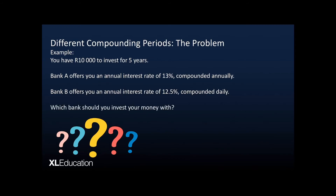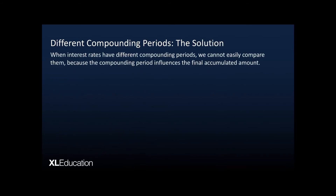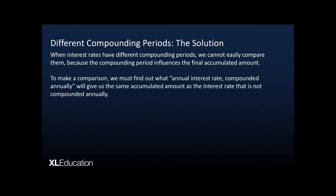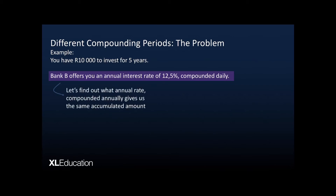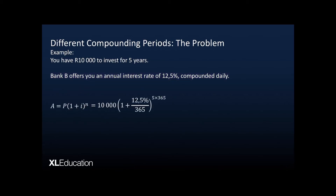When interest rates have different compounding periods, we cannot easily compare them because the compounding period influences the final accumulated amount. To make a comparison, we must find what annual interest rate compounded annually gives us the same accumulated amount as the interest rate that is not compounded annually. For Bank B, which offers 12.5% compounded daily, let's find the equivalent annual rate compounded annually.